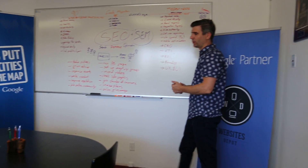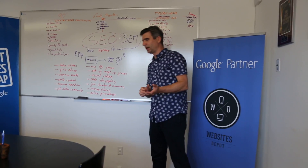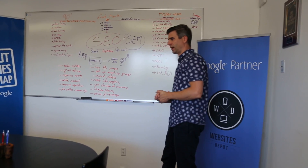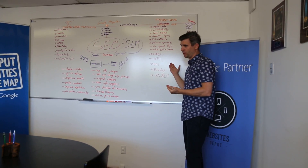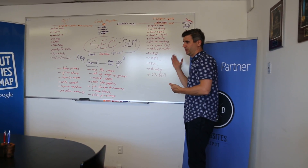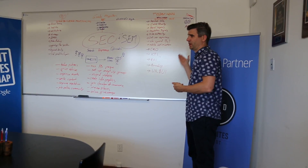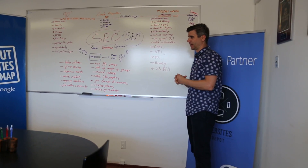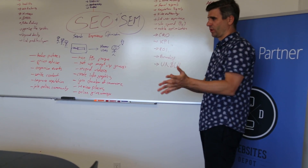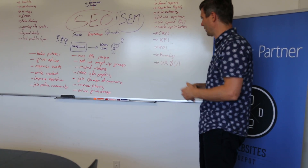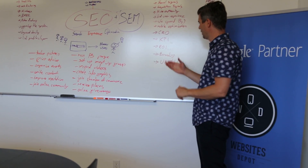Key KPIs — key performance indicators — like, for some people, branding, traffic, sales, or whatever. It's like, what is an indicator of your performance of an online marketing campaign?